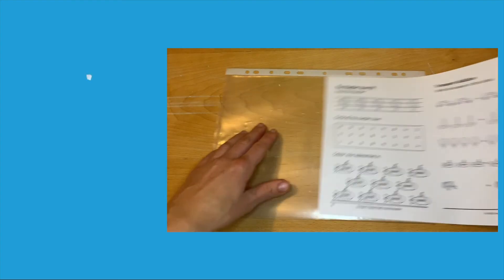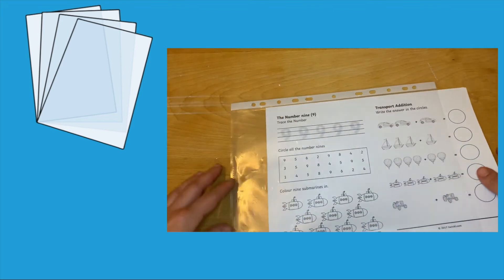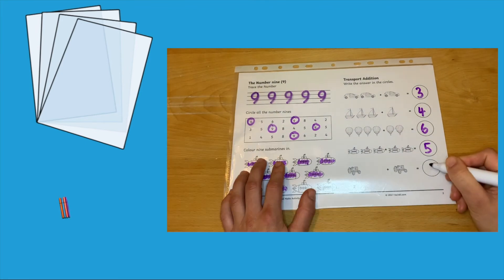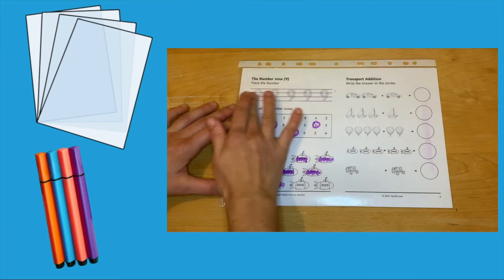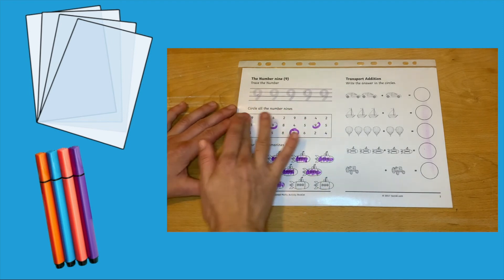To make this activity book or the separate worksheets reusable, simply laminate them or put them into a plastic wallet and then your children can complete them using a whiteboard pen.